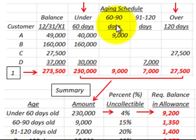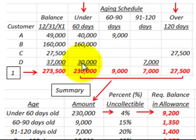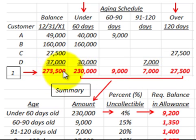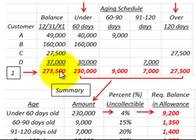In this case the categories are: under 60 days, 60 to 90 days, 91 to 120 days, and over 120 days. Then we total the amounts for each of these date classifications. For each classification we just total the amounts and come up with a subtotal. In this case we've got total accounts receivable for our four customers at $273,500, divided up depending on the age schedule.